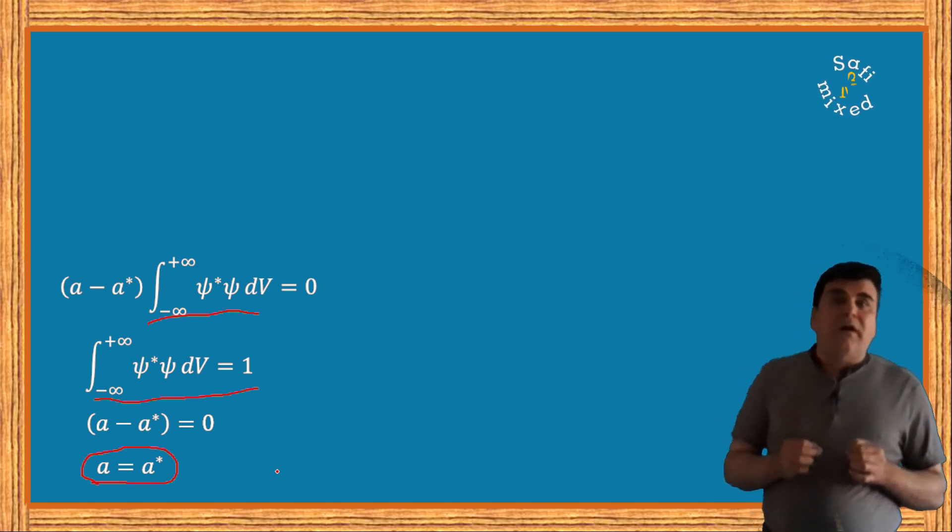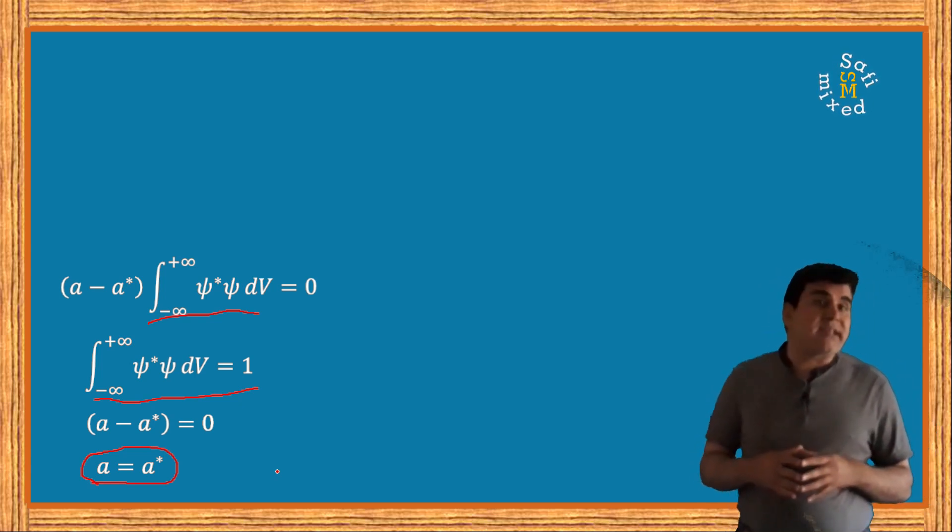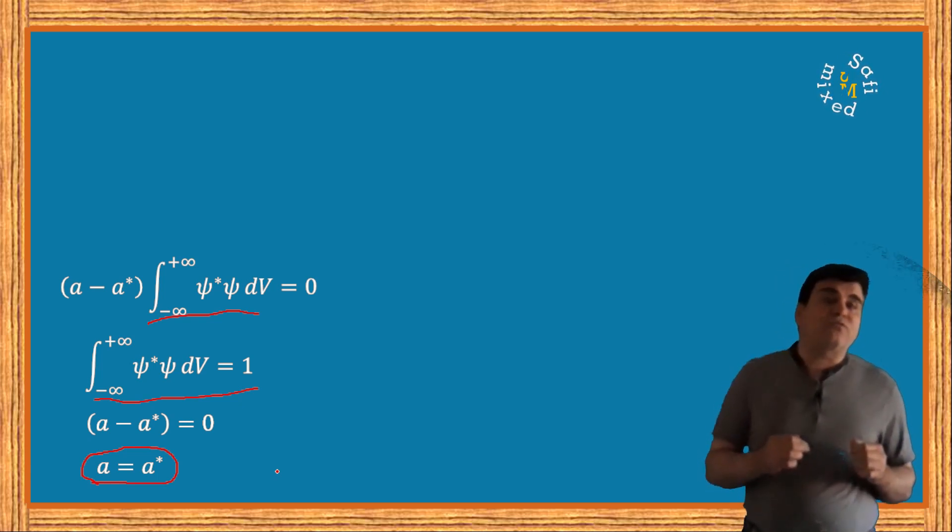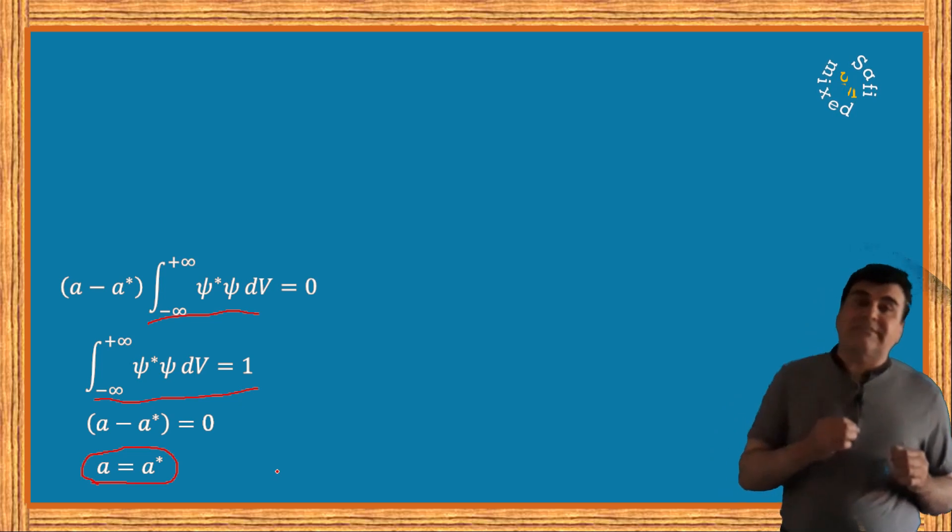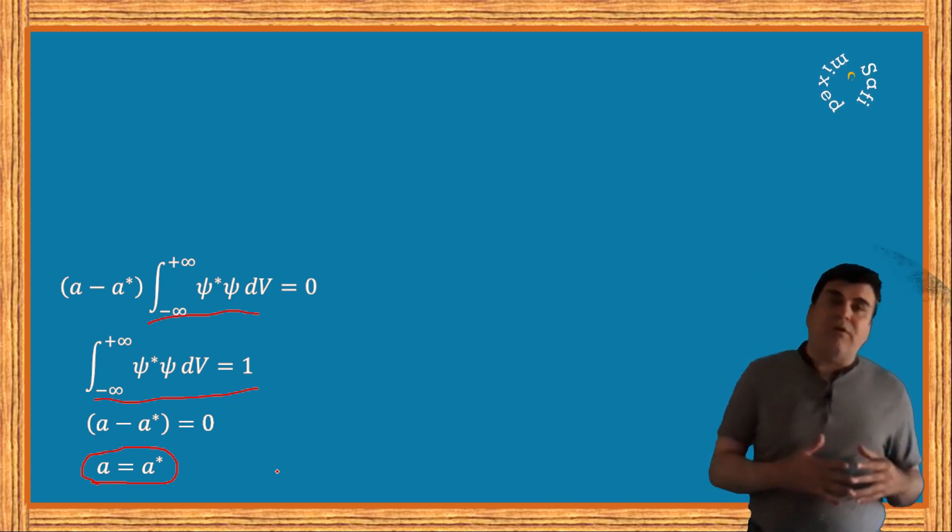This nature of being real of the eigenvalues of Hermitian operators is physically very significant because the eigenvalues of Hermitian operators correspond to physical properties of a system, and the physical property of a system cannot be imaginary or complex.